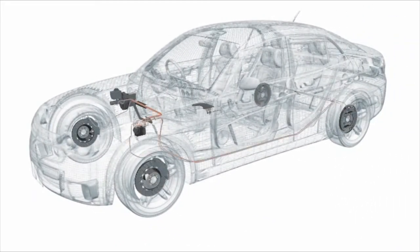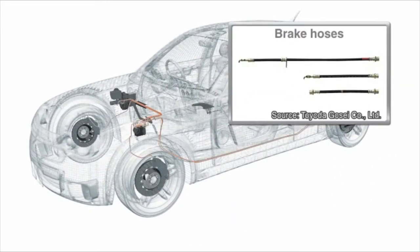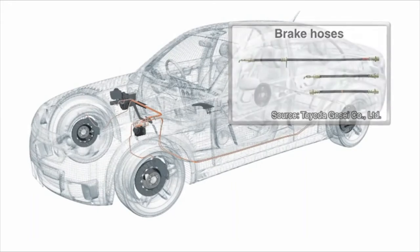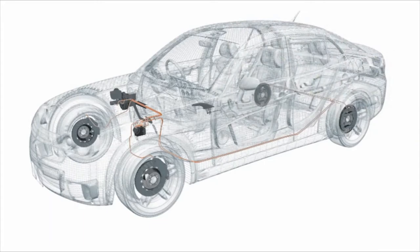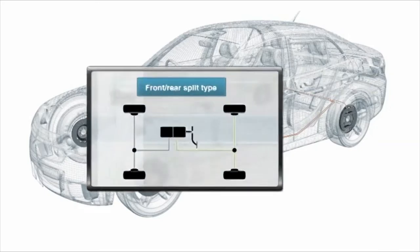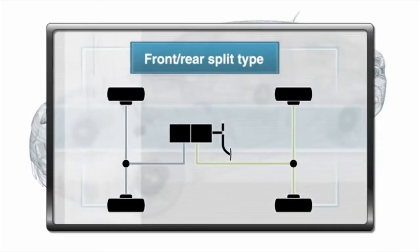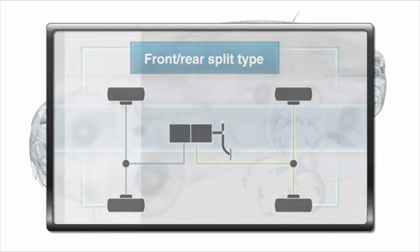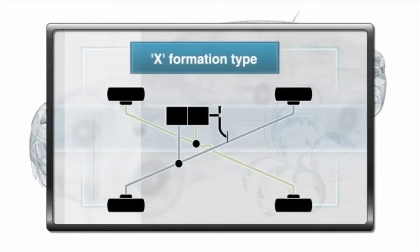The cylinder pushes out the brake fluid to each wheel via the brake hoses and pipes, activating the brakes. As a safety precaution against brake hose failures, hose systems are typically divided into two types: one is a front-rear split, and the other is a diagonal split system that divides the circuit into an X formation.